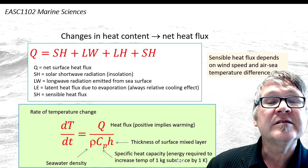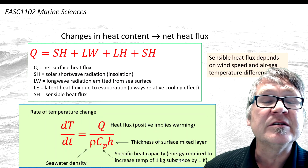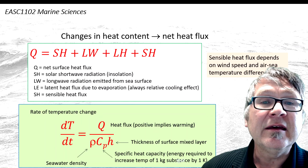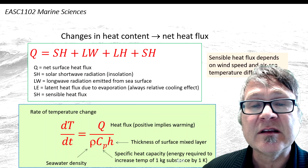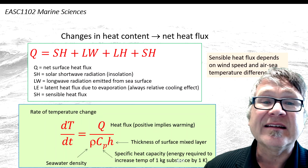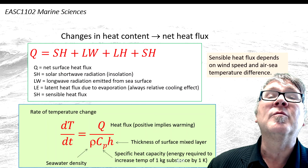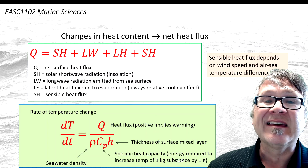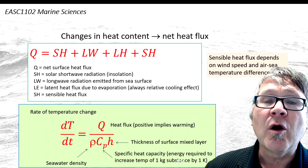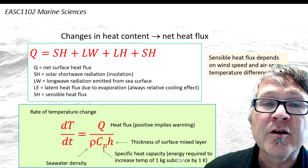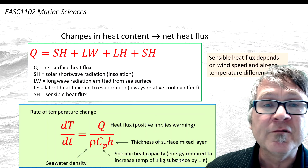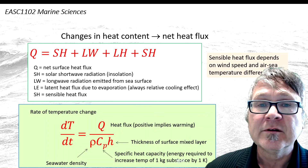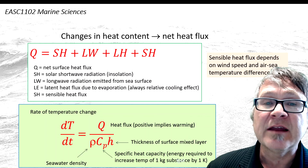This is how changes in heat content work in the surface mixed layer. Heat anomalies can also be carried horizontally by currents — they can be moved around. We call this advection.